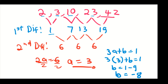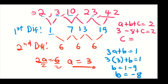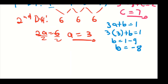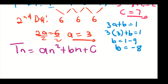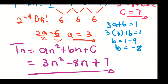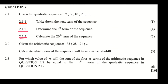To find c, we use a + b + c = first term of the sequence, which is 2. Substituting: 3 − 8 + c = 2, so c = 7. Therefore the formula is Tn = 3n² − 8n + 7.